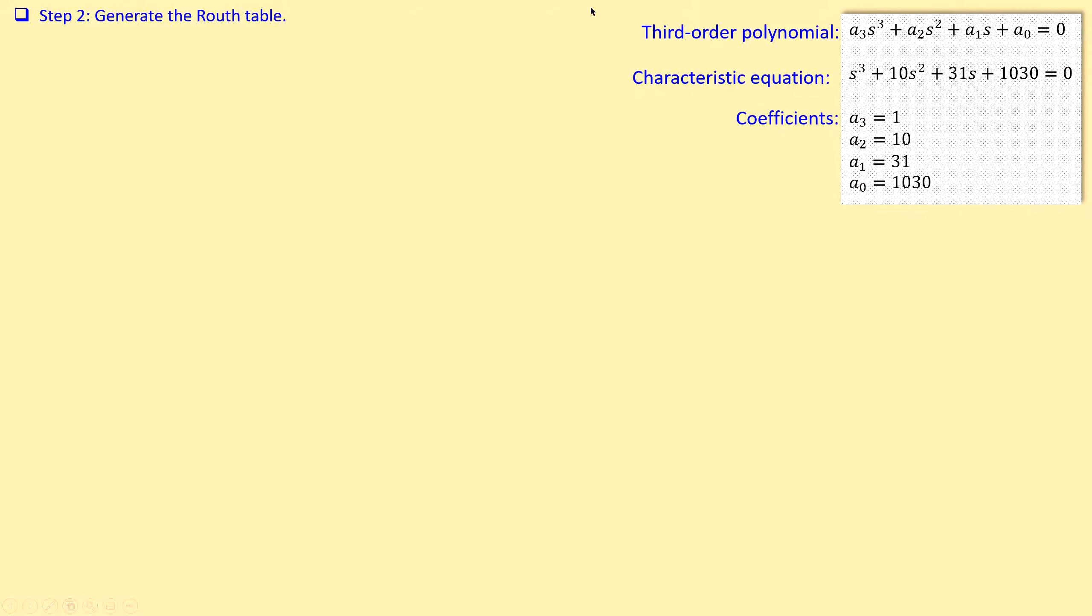Next step is step two: generate your Routh table. You need to generate a table. Since we have a third order system, and this is all given here, the characteristic equation again on the right side, as you can see, we need to compare that first with the third order polynomial, which is a₃ times s to the power of 3, etc. So you can see we have one, two, three, four constants, coefficients, which are just constants.